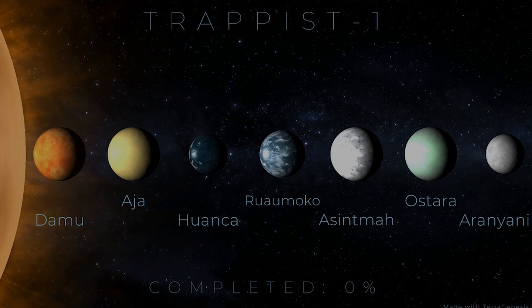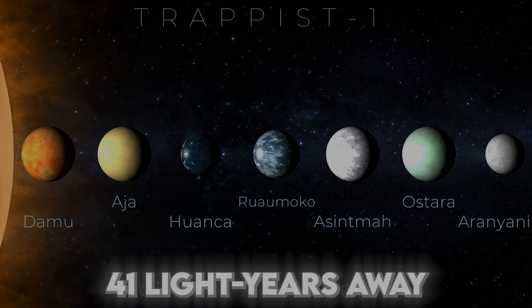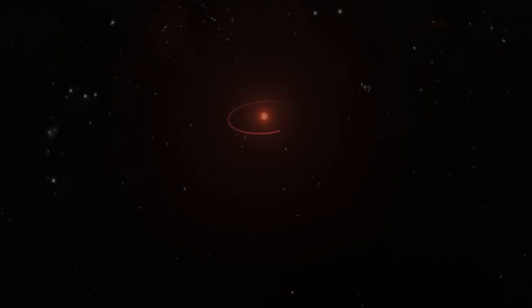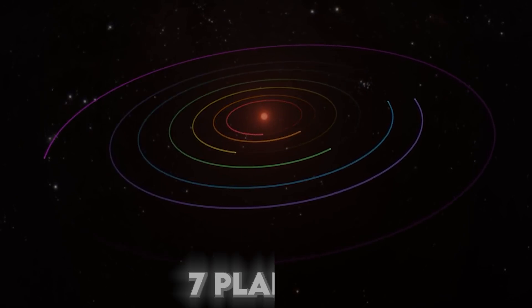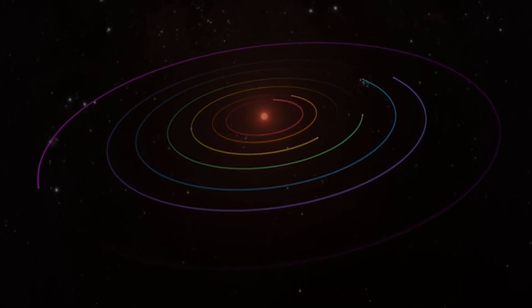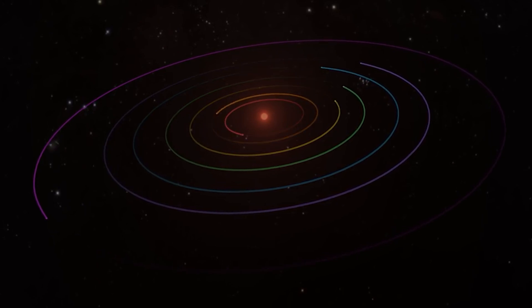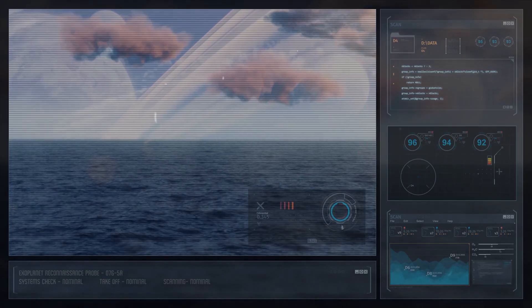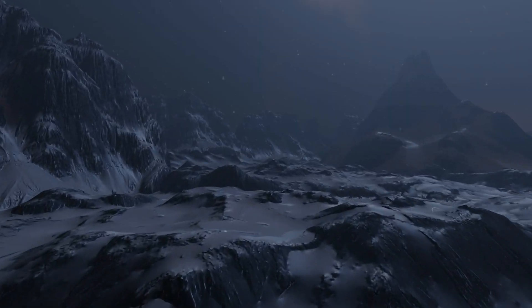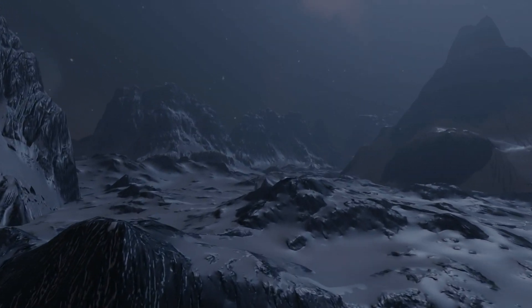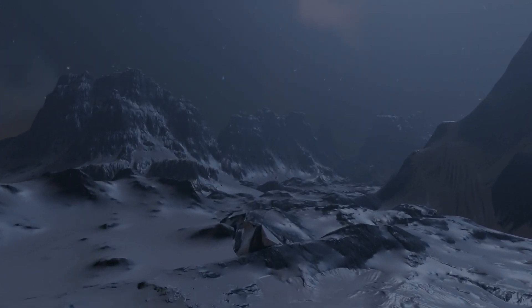The TRAPPIST-1 system, which is only 41 light-years away, is a great example. It has a red dwarf star and seven rocky planets, three of which lie within the habitable zone where liquid water might exist. Studying these environments could help us understand the diverse conditions under which life might emerge.